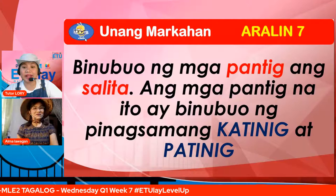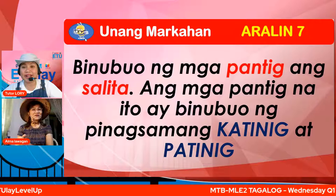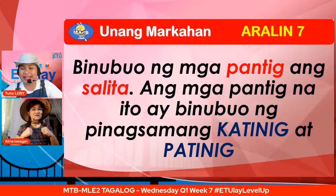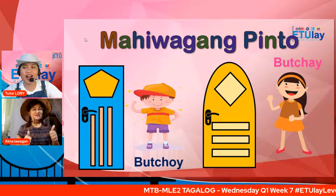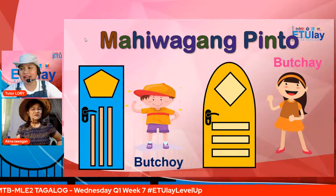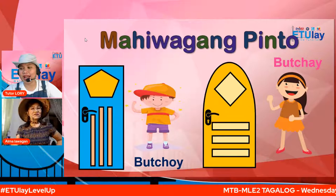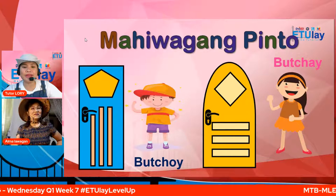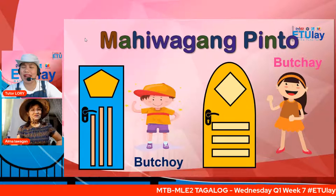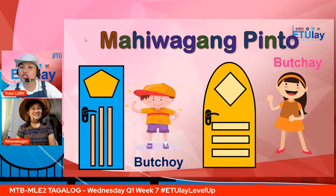Kayo ba? Meron din ba kayong matalik na magkaibigan? Maaari mo bang ilagay sa comment section kung sino ang iyong matalik na magkaibigan? Tara, samahan natin ang matalik na magkaibigan na si Butchoy at si Butchay. Ang sabi ni Isaiah, si Ate R. Jane po. Itong si Butchay at si Butchoy ay hindi lang matalik na magkaibigan — sila rin ay magkapatid. Sabay silang napanganak — sila pala ay kambal!